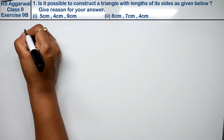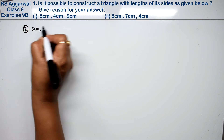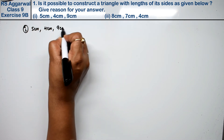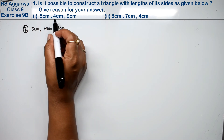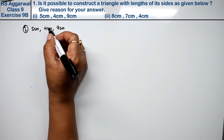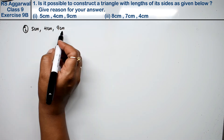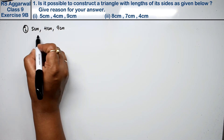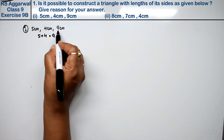In the first part, the sides given are 5 cm, 4 cm, and 9 cm. We will check whether any two sides add up to more than the third side. If we add the two smaller sides: 5 plus 4, that equals 9, which is only equal to the third side, not greater.